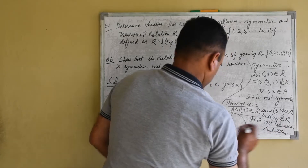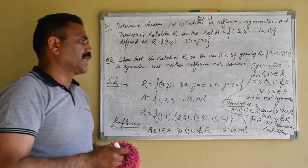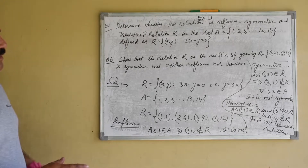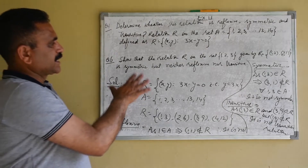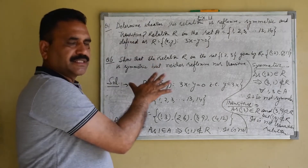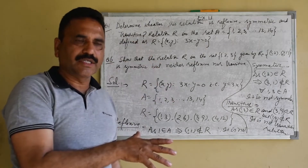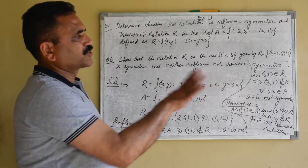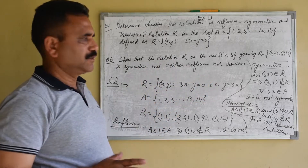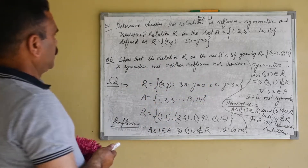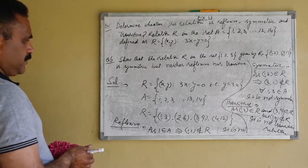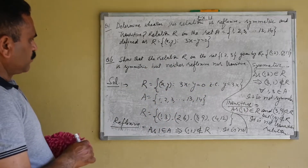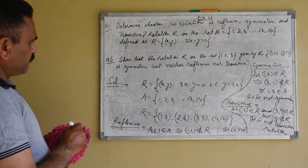So how can we write the conclusion? This relation is neither reflexive, nor symmetric, nor transitive. Now we move to the second problem.